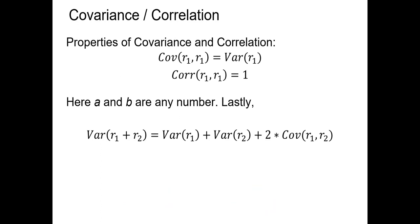There are some final points to know about covariance and correlation. First, the covariance of any random variable with itself is simply the variance of that random variable. Also, the correlation of a random variable with itself equals 1. Finally, the variance of the sum of two random variables equals the variance of variable 1 plus the variance of variable 2 plus 2 times the covariance between the two. We'll use this formula when calculating the variance of an entire portfolio.